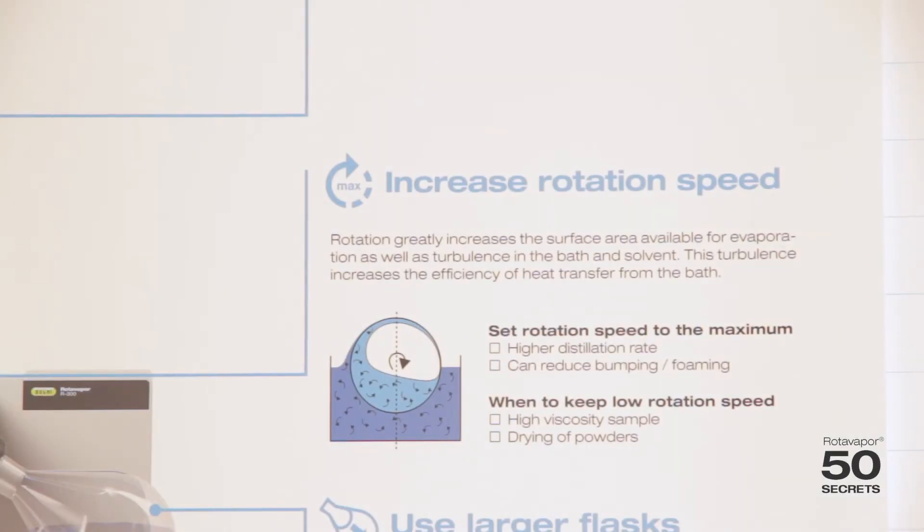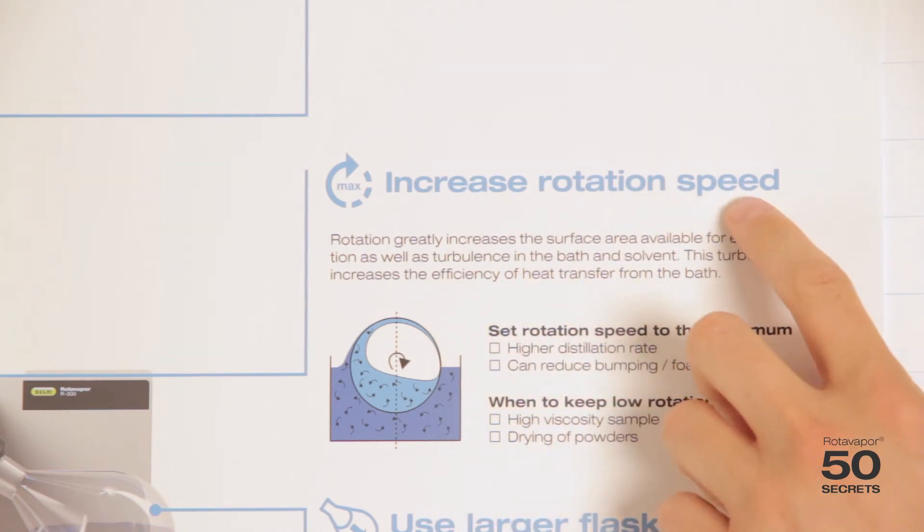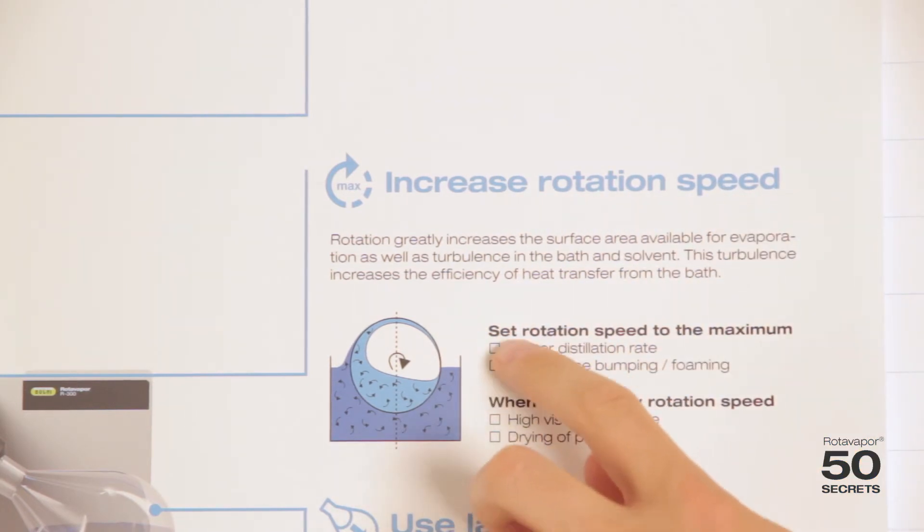The fourth secret is a very important one. It's about rotation speed. It says that you should always set the rotation speed to the maximum. That will increase the efficiency quite dramatically.